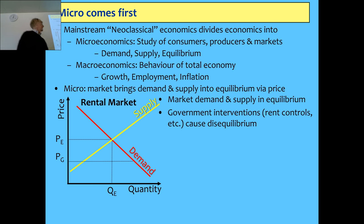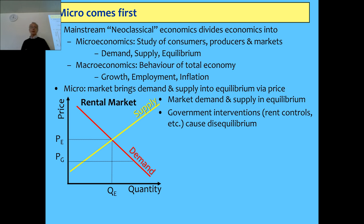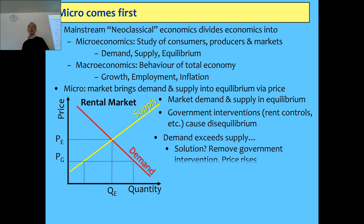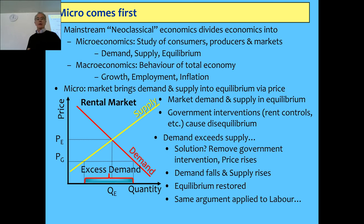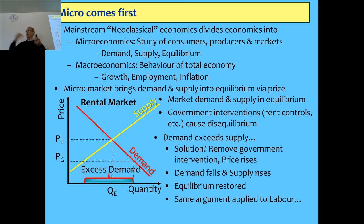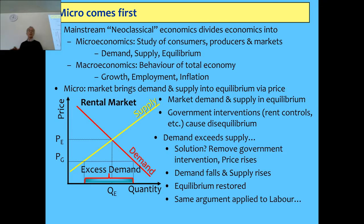Their argument is that equilibrium can be ruined by non-market interventions. They treat the government, trade unions, and monopolies as non-market interventions that cause disequilibrium. For example, the government might impose rent control. With rent control, there's much higher demand because the price is lower, but much lower supply for the same reason — so demand will exceed supply. Their solution is to get rid of the government intervention and abolish rent controls. They see the gap between demand and supply as excess demand. Equally, you can have the price set too high, giving excess supply. The philosophy of mainstream economics is pretty much: leave it to the market.